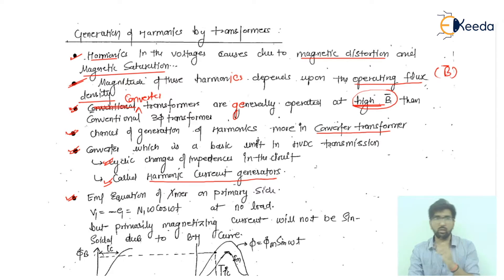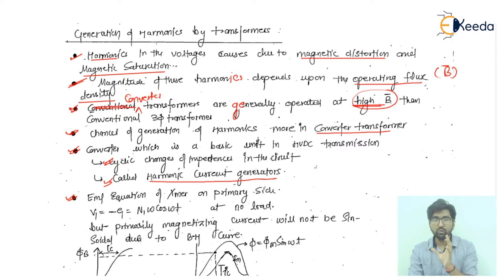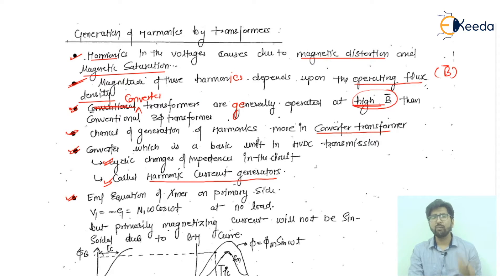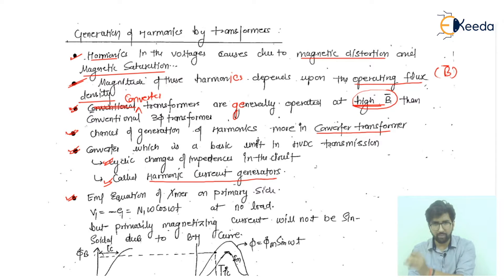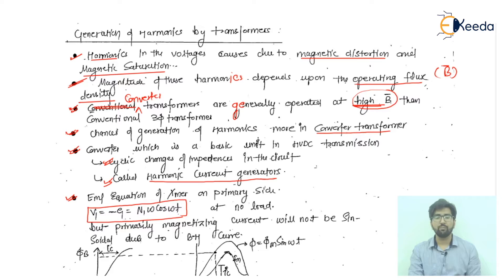Regarding the EMF equation of the transformer on the primary side — which we have already discussed in transformer chapters — V1 equals minus E1, given as N1·ω·cos(ωt). This is the value at no load. However, the primary magnetizing current will not be sinusoidal due to the BH curve.